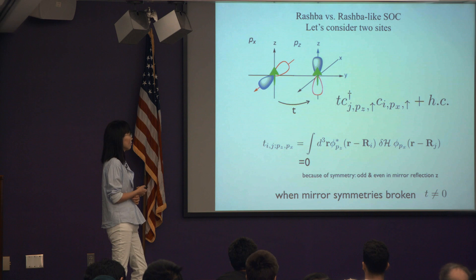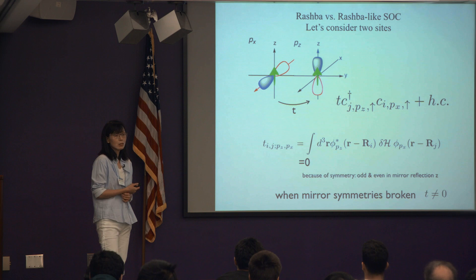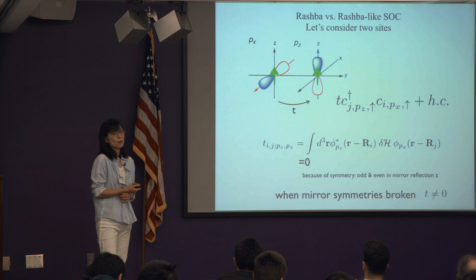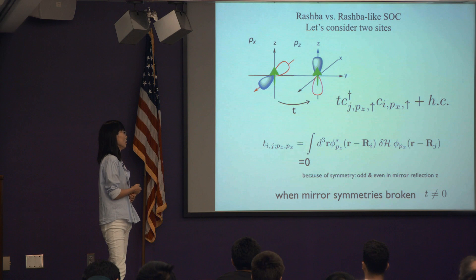Now let's think about where you see Rashba spin-orbit coupling versus Rashba-like spin-orbit coupling — both have momentum-dependent spin-orbit coupling. Those who have studied semiconductors dealing with heavy bismuth are dealing with p-orbitals with j = 1/2 and 3/2. If inversion is broken, we say we have spin-orbit coupling, but microscopically it comes from atomic spin-orbit coupling. It doesn't come out of nowhere — it comes from here.